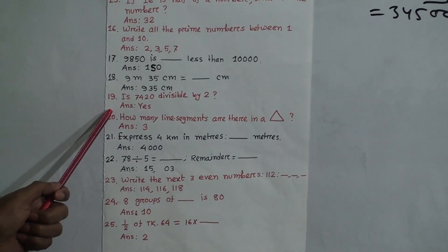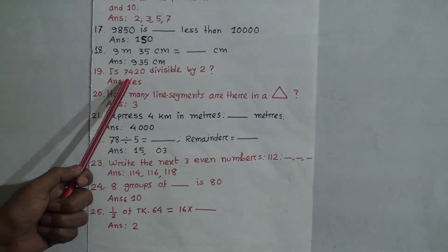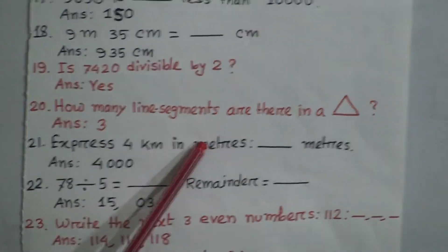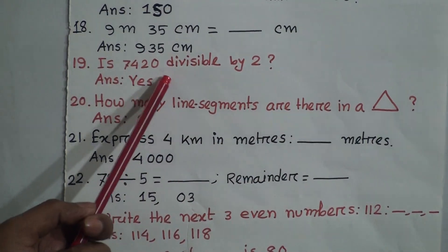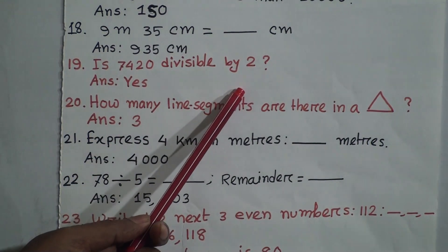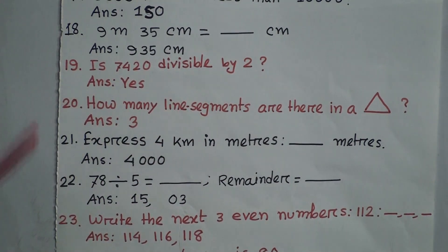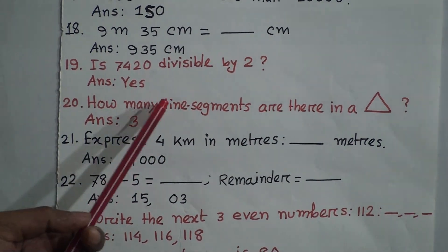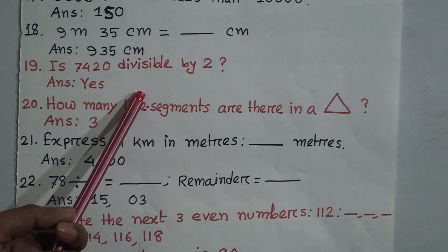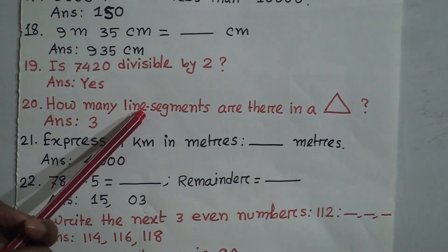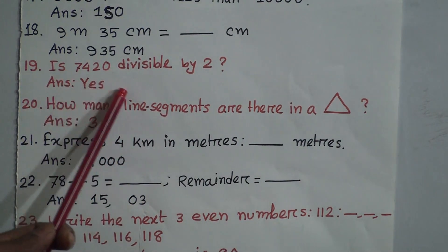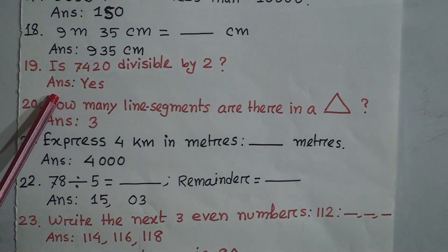Question 19: Is 7,420 divisible by 2? The ones-place digit is 0. If any number has 0, 2, 4, 6, or 8 in the ones place, it is divisible by 2. So 7,420 is divisible by 2. Answer: yes.